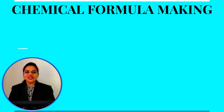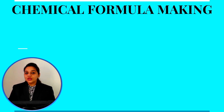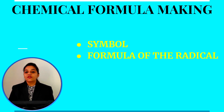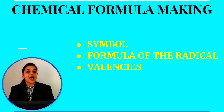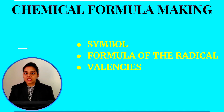Hi everyone, welcome to Curious Minds with Hemangini. Today we are going to learn about chemical formulas — how to make chemical formulas. Before writing any chemical formula, you should know about only three things: first, the symbols of elements; second, the formula of the radical; and third, the valencies of monoatomic ions and polyatomic ions. If you know these three things, you are good to go.